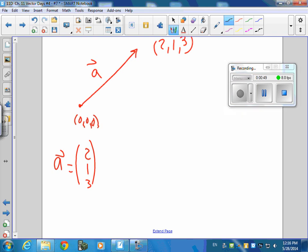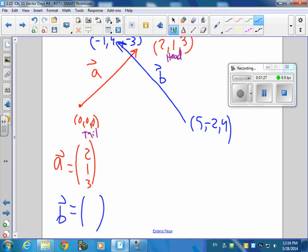If this is the head and this is the tail, we always go heads minus tail. Well, let's say I took a different point, a different vector. This one we'll call vector B. This one, the tail is at 5, negative 2, 4, and the head is at negative 1, 4, negative 3. Okay, so tell me what vector B in column vector form is going to look like. What do you think?